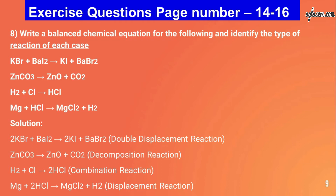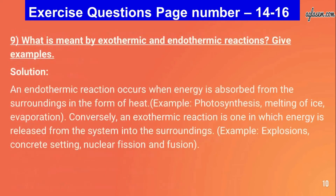Solutions for question eight: 2KBr + BaI₂ → 2KI + BaBr₂ - this is a double displacement reaction. ZnCO₃ → ZnO + CO₂ - this is a decomposition reaction. H₂ + Cl₂ → 2HCl - this is a combination reaction. Mg + 2HCl → MgCl₂ + H₂ - this is a displacement reaction.